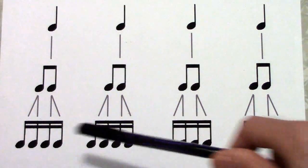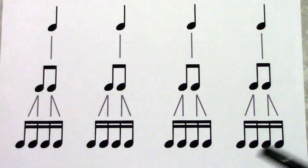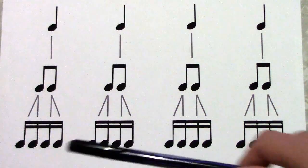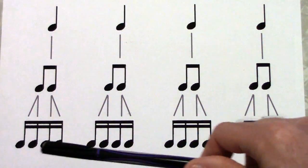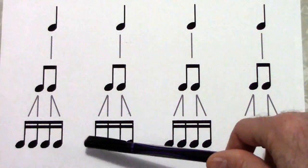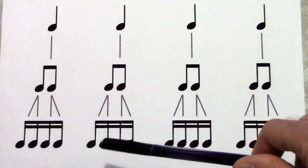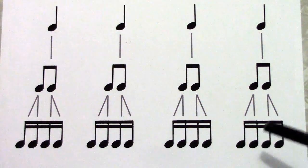especially when you get to the 16th notes here. You can't count to 16, especially in a fast rhythm. You just can't say it that fast. So the phonetic tool that you use for 16th notes is very simple. It's 1-E and a, 2-E and a, 3-E and a, 4-E and a, 1-E and a, 2-E and a, 3-E and a, 4-E and a.